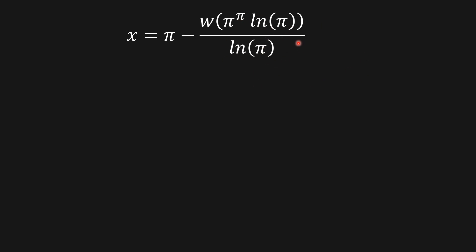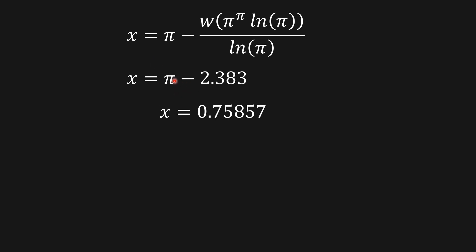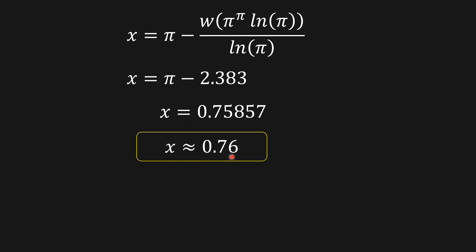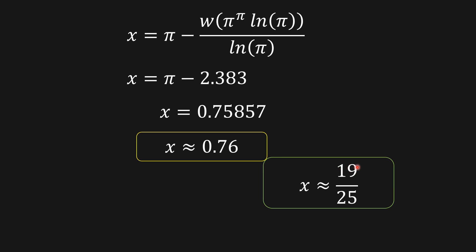I tried to bring an image but it wasn't working, so apologies for that. You can plug this expression into Wolfram Alpha to verify. With three digits, the W function value gives us x approximately equal to 0.7585, which we round to approximately 0.76, or as a fraction, x is approximately 19 over 25.